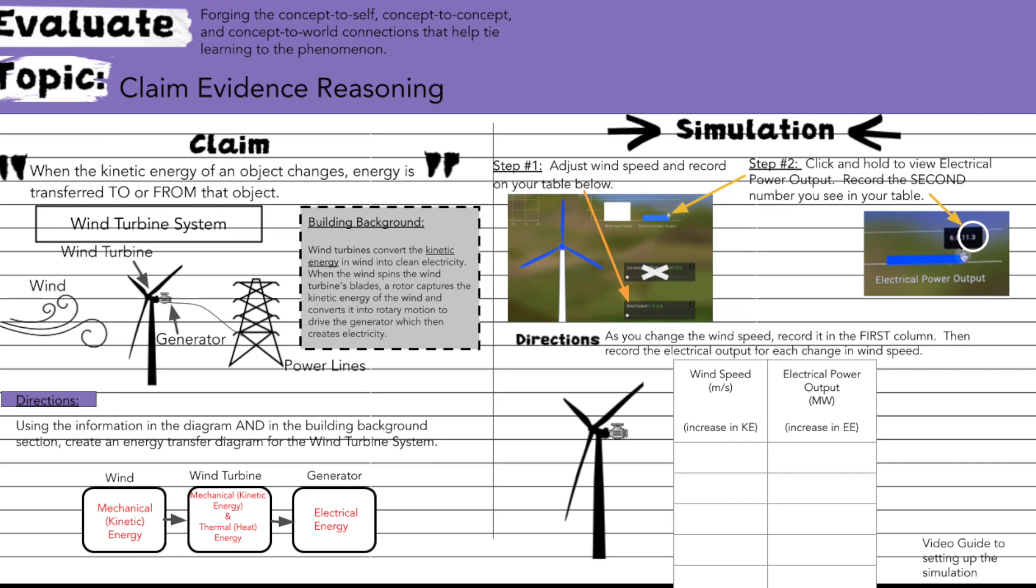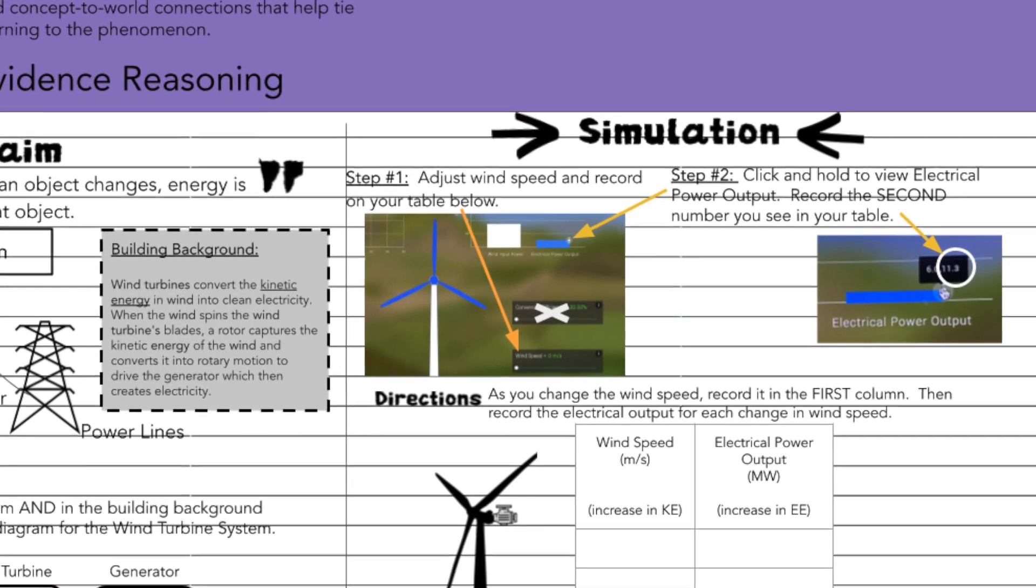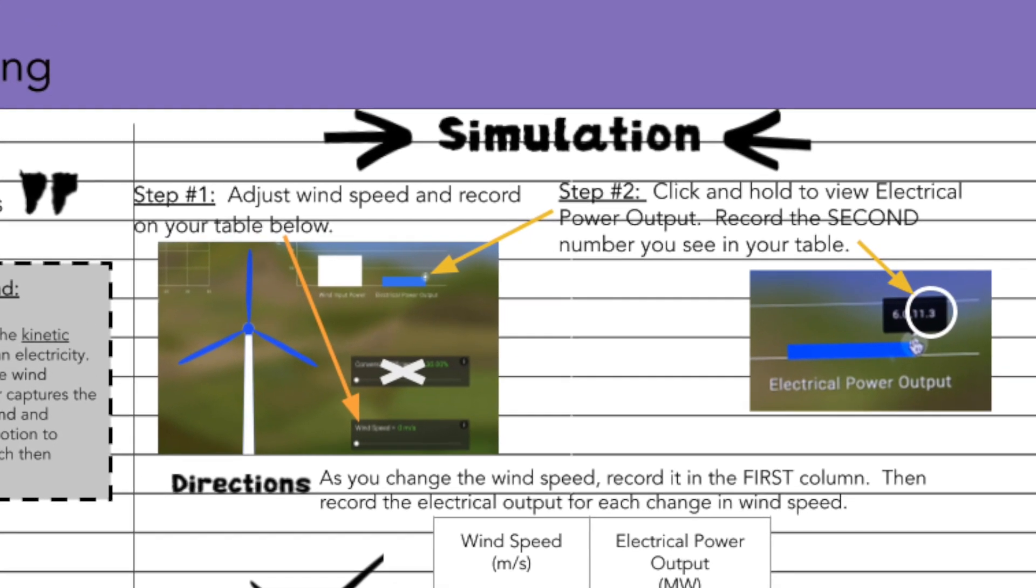Once we've identified the kind of energy in this wind turbine system, we can go ahead and move on over to the simulation side of the page. To get started, you're just going to click on the link that says simulation.